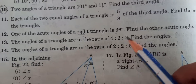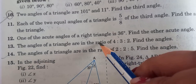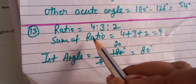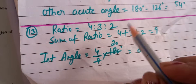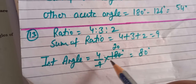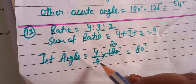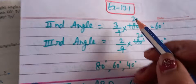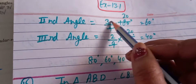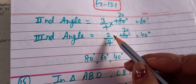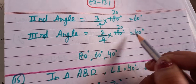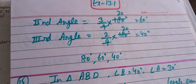Question number 13: the ratio of the three angles of a triangle is 4:3:2. The sum of the ratio parts is 9. First angle = 4/9 × 180 = 80 degrees. Second angle = 3/9 × 180 = 60 degrees. Third angle = 2/9 × 180 = 40 degrees. So the three angles are 80°, 60°, and 40°.